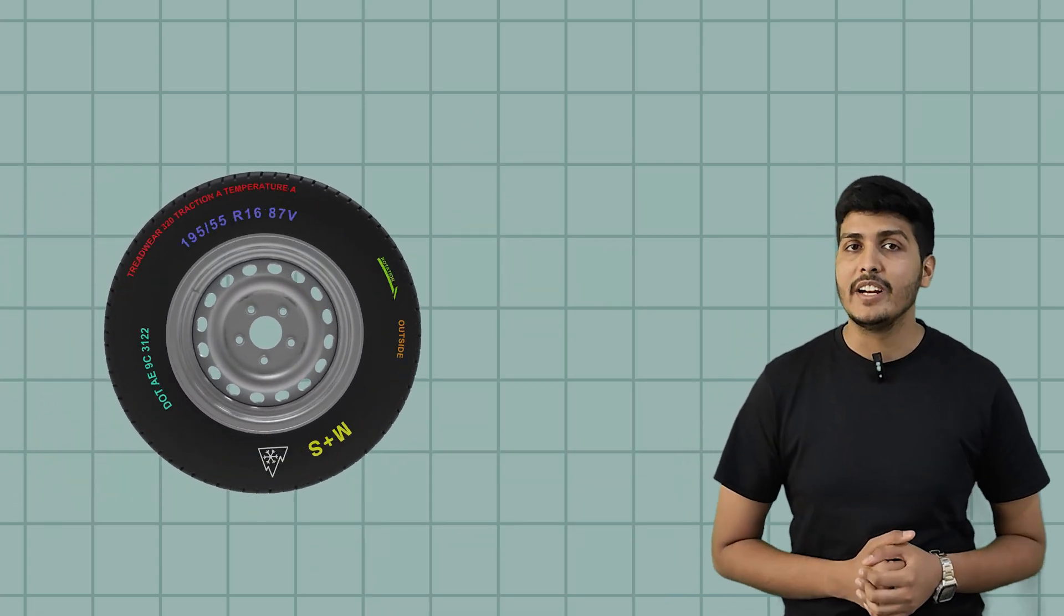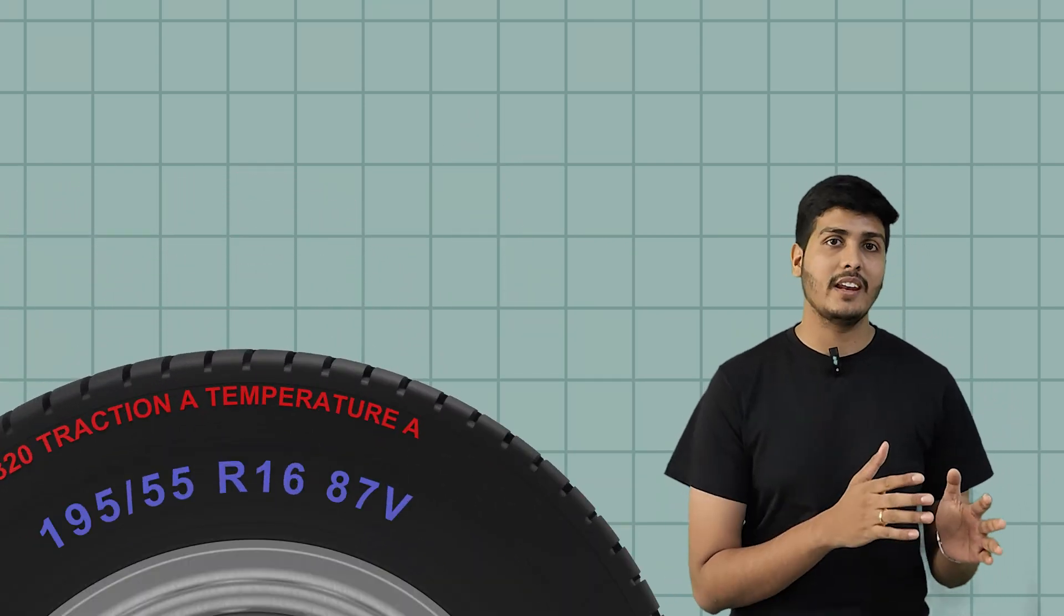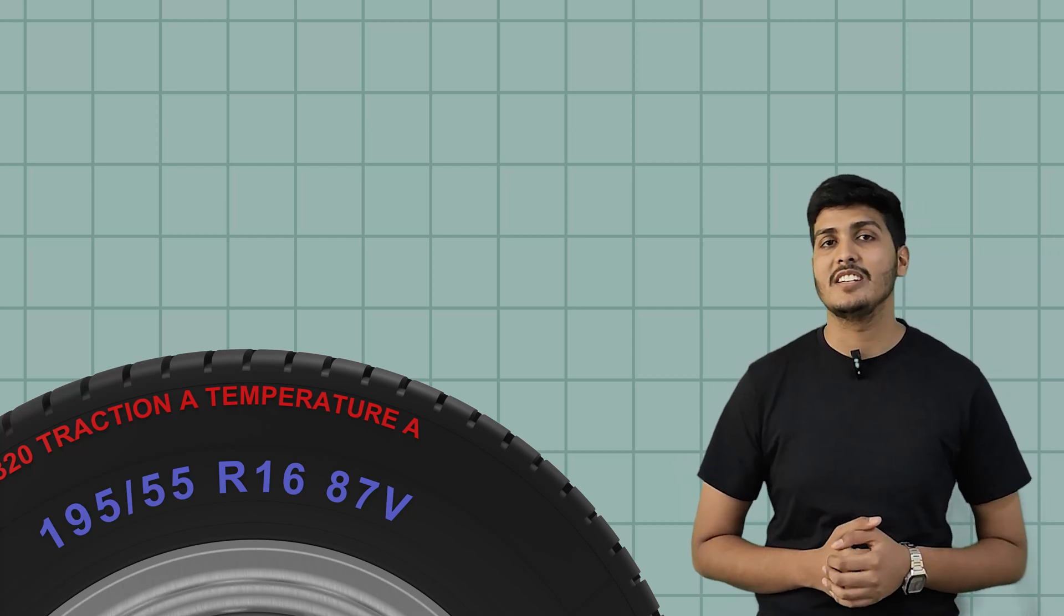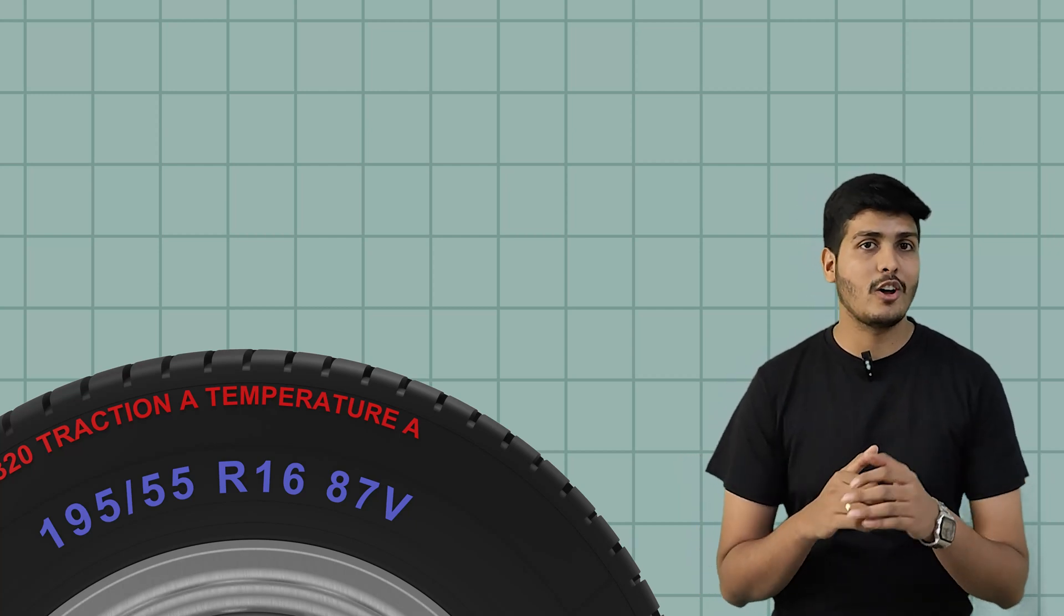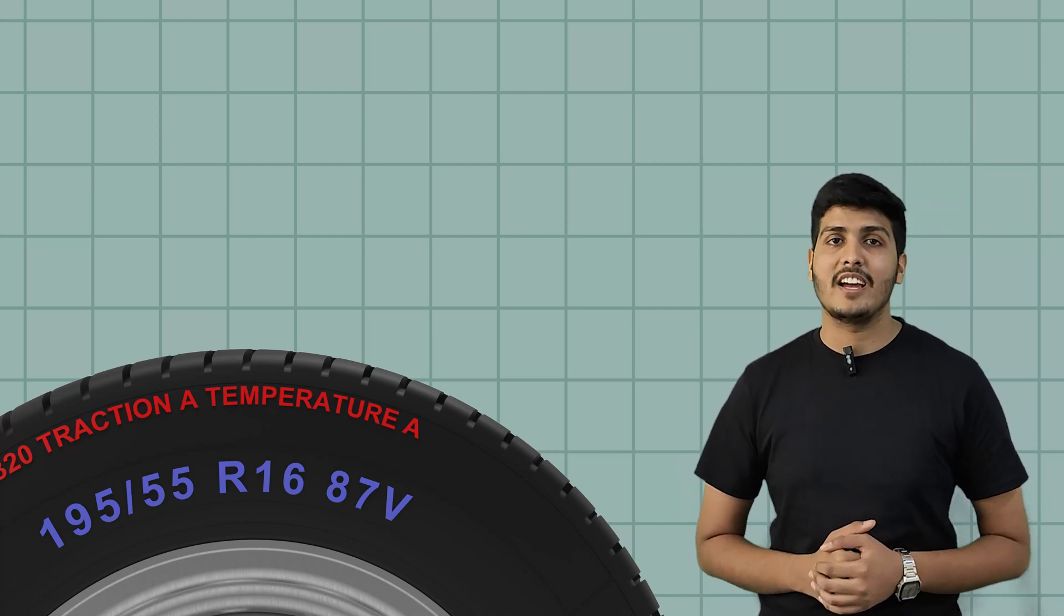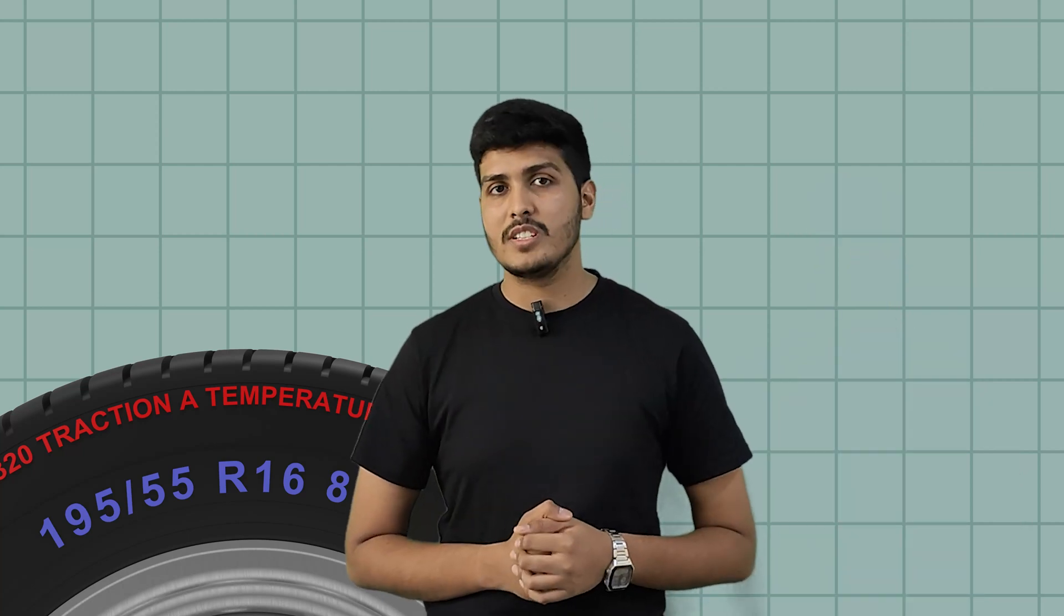Let's start with something we have all seen. A random looking code written on the side of your tire. 195, 55, R16, 87V. It's not at all random. It's like your tire's ID card. So what actually do these codes and markings mean?